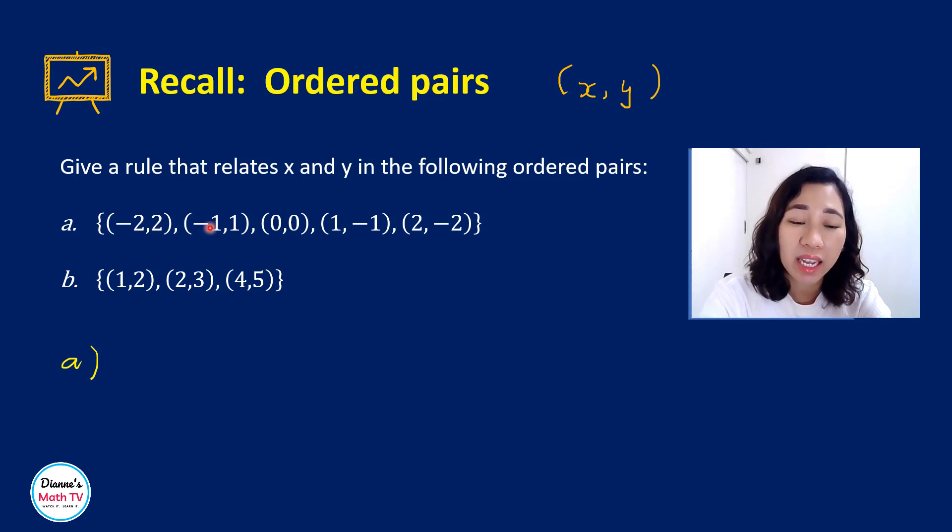If x is negative 1, the y is equal to the negative of negative 1. So therefore, the rule here is that the y-coordinate is just equal to the negative of your x-coordinate. Is that clear?